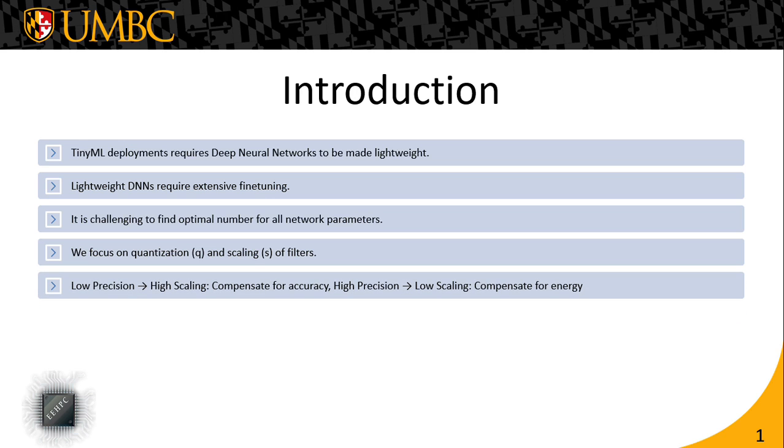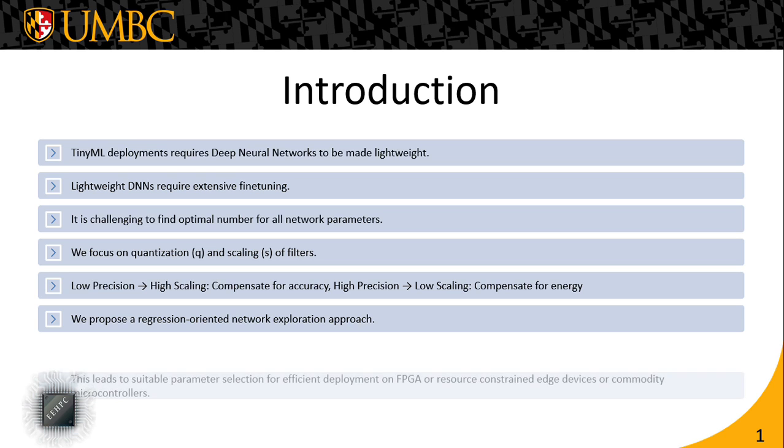Traditionally whenever a low precision network is being used, its scale or the scale of the filters is increased so one can make a case for the accuracy. Similarly, using full precision networks the scale is lowered so one can make a case for the energy. We are claiming that between these two extremes there is actually a sweet spot where this quantization and scaling is suitable for both accuracy and energy. To that extent we are proposing a regression oriented network exploration approach that will figure out the best of both worlds.